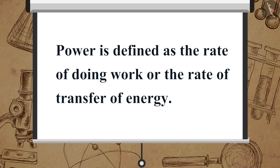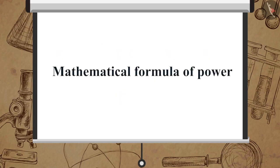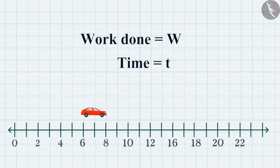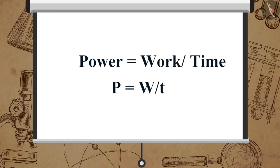Now let us look at the mathematical formula of power. Let the work done by an object be W in time t, then power is equal to work upon time: P is equal to W upon t.